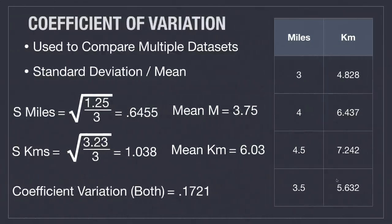The coefficient of variation is used to compare two measurements that operate on different scales. Here I'm comparing miles to kilometers — three miles is approximately equal to 4.8 kilometers. Even though they measure the same distance, because they use different units, that is not seen when we calculate our standard deviation. The standard deviation for miles is 0.645 and for kilometers is 1.038. However, if we divide by the mean for each, we can see they actually have the same exact dispersion, which works out to 0.1721.